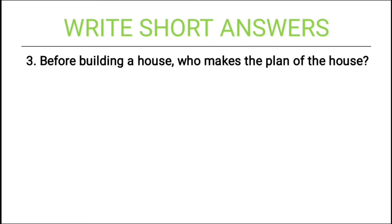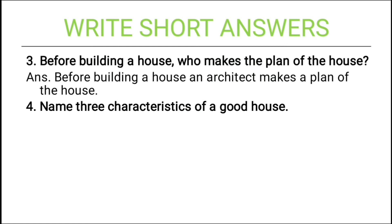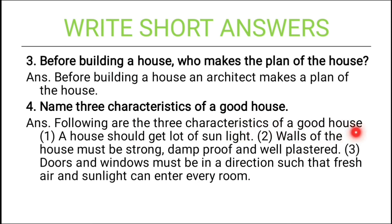Third: before building a house, who makes the plan of the house? Before building a house, an architect makes a plan of the house. Fourth: name three characteristics of a good house. A house should get a lot of sunlight. The walls of the house must be strong, damp proof, and well plastered. Doors and windows must be positioned so that fresh air and sunlight can enter every room, because sunlight kills all microorganisms and fresh air keeps the air clean — that keeps us healthy. Strong and damp-proof walls also ensure insects won't breed.